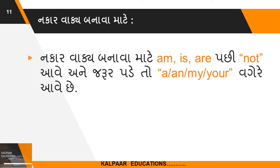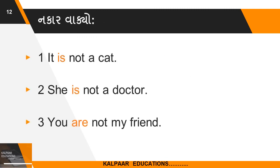આવા પ્રશ્નાર્થ વાક્યો જુઓ. Am, Is, Are પછી A, An, My, Your - articles અથવા possessives આવે. નકારાત્મક વાક્ય: It is not a cat. She is not a doctor. You are not my friend.